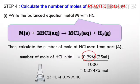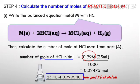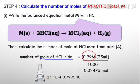In step number four, we calculate the number of moles of reacted metal M. This is the equation that involves metal M with HCl: M(s) + 2HCl(aq) → MCl2(aq) + H2(g). Then calculate the number of moles of HCl used from part A. For example, the number of moles of initial HCl is 0.99 molar times 25 mL that we use with a pipette, divided by 1000, so we get 0.02475 mol.